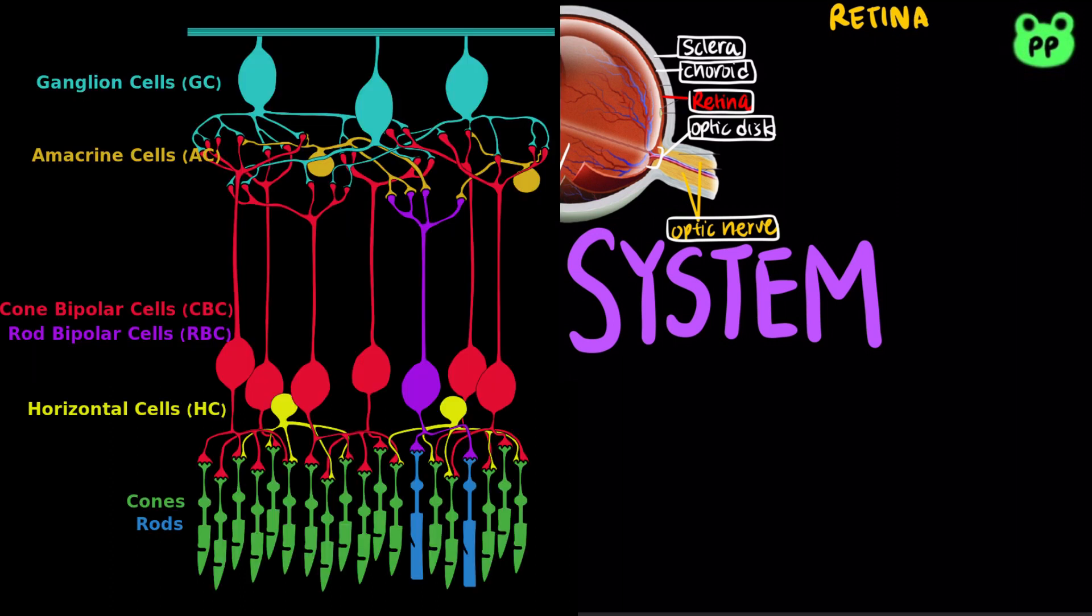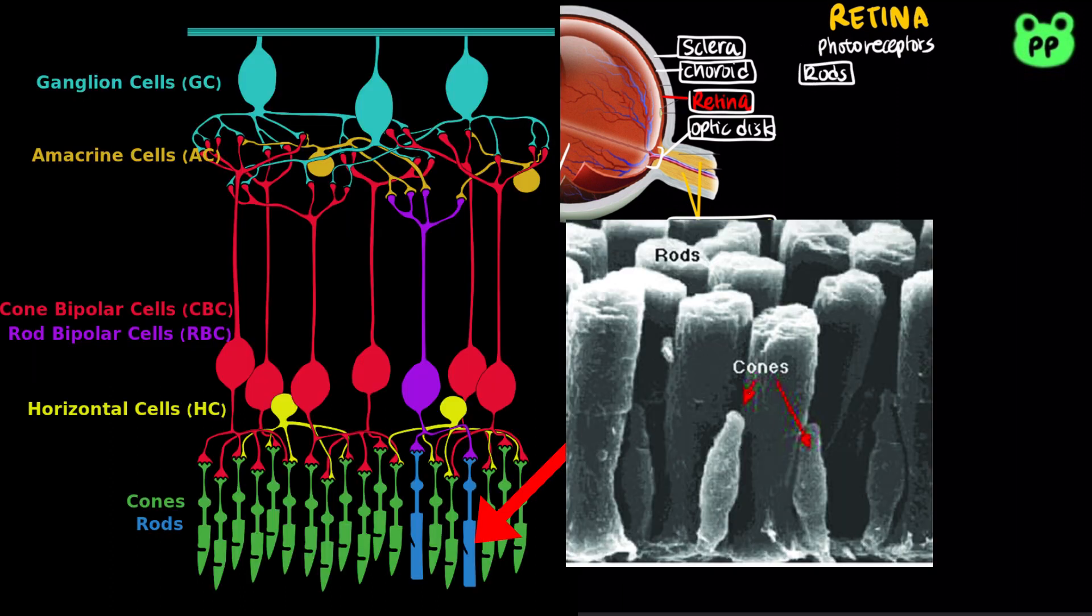The human retina contains two types of photoreceptors. The rods are light-sensitive photoreceptors that are concentrated around the periphery of the retina, whereas the cones are photoreceptors that distinguish colors and are concentrated in the fovea, which is the center of the visual field.